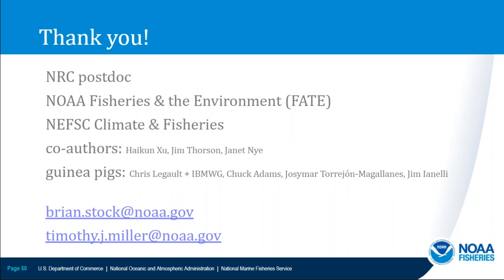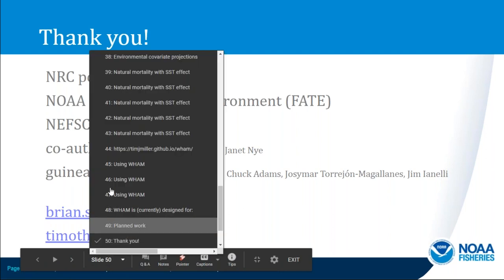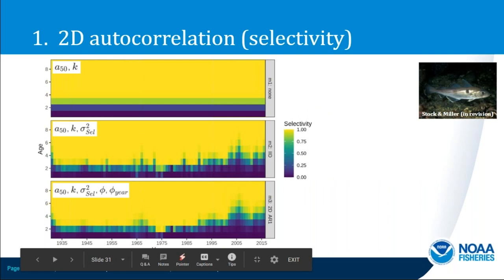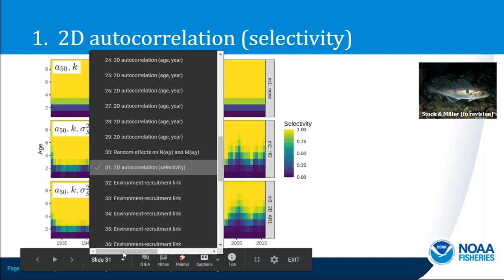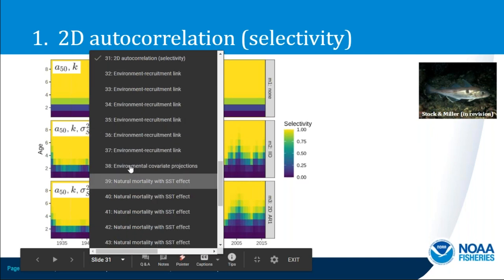First question: is the selectivity on page 31 of your slides for surveys or fisheries? That specific example is for the fishery, but you can specify the 2D AR1 process on selectivity for fishery or for indices. Second question: would you explain a positive process deviation estimated for the numbers at age for ages greater than one as evidence for immigration to the model stock?